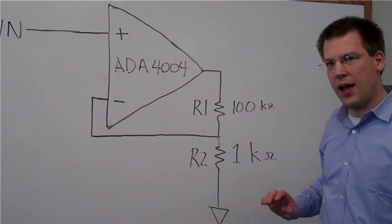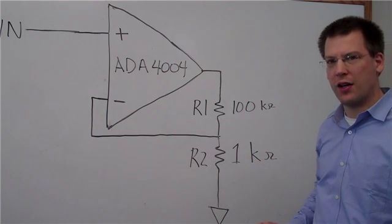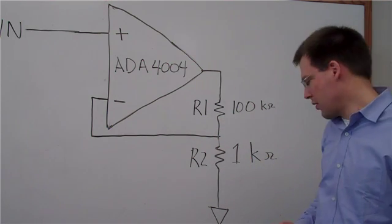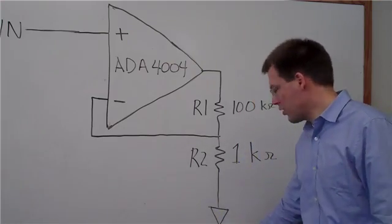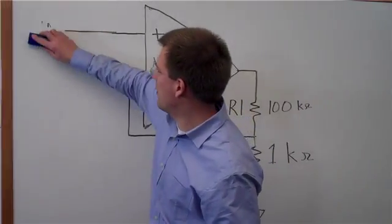When we calculate noise for an amplifier configuration, we ground all the voltage sources. So we're going to ground our input signal.